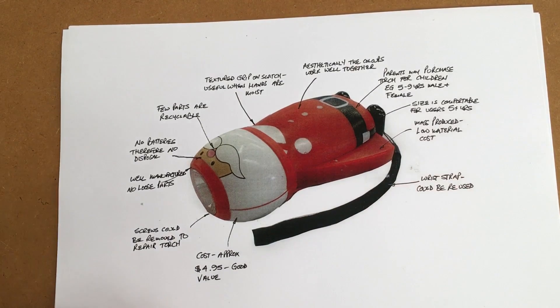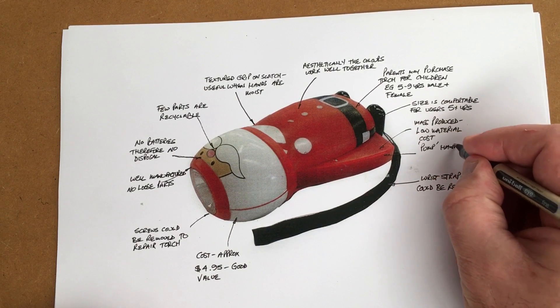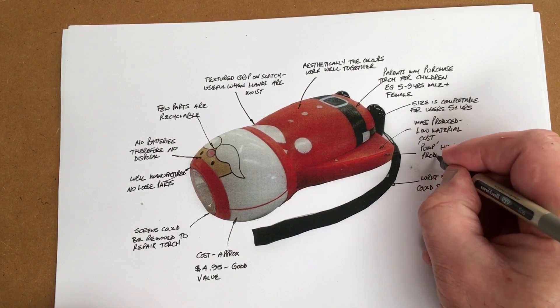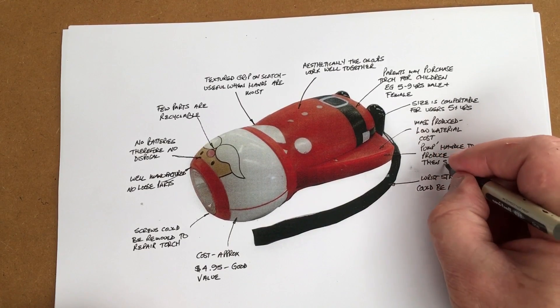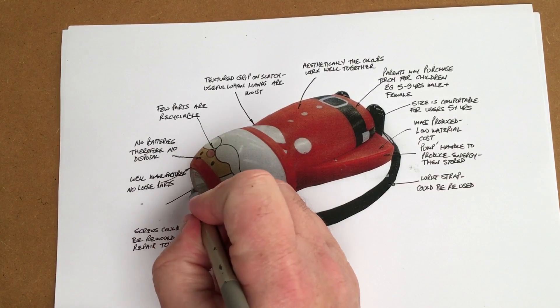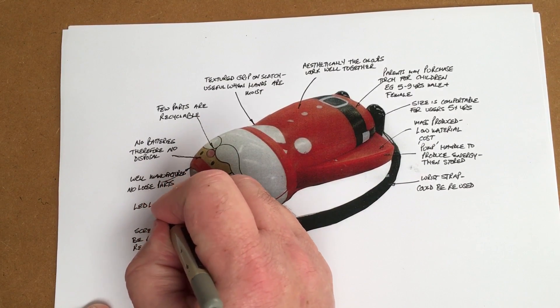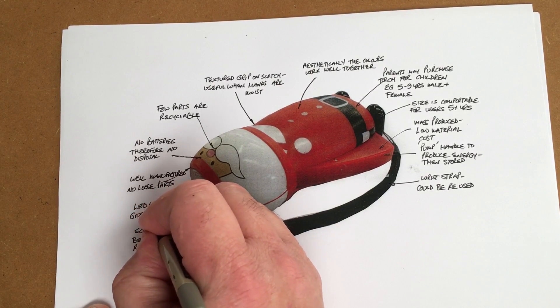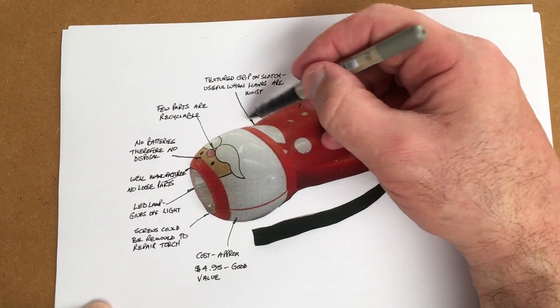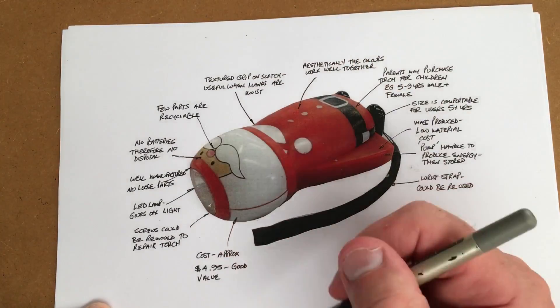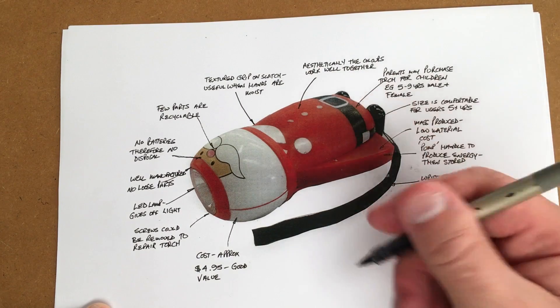Function. I'm going to put that you pump handle to produce energy, then stored. LED light, emitting diode lamp, gives off light because that's what it does. I could add also in here about the switch at the back at the top here, so that's how the light's actually released. I don't think that it could really be improved because it's very much a novelty item.